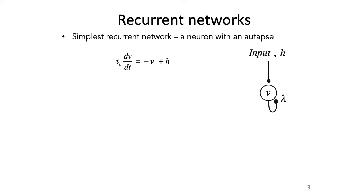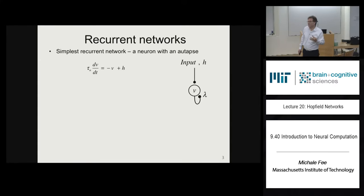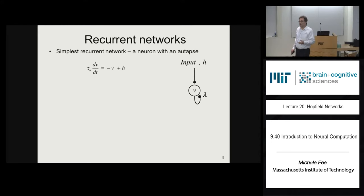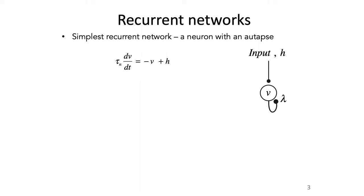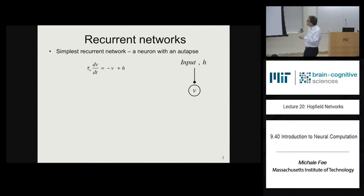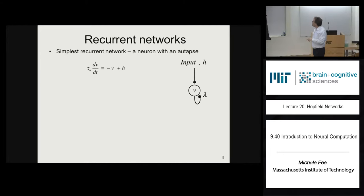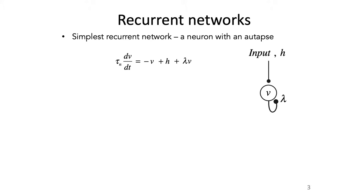We started by introducing the simplest recurrent network: a single neuron with a recurrent connection called an autapse, where the recurrent connection has strength lambda. Without a recurrent connection, the equation is tau dv/dt equals minus v — the minus v gives a leak term, so the neuron's response jumps up and decays exponentially in response to an input h.